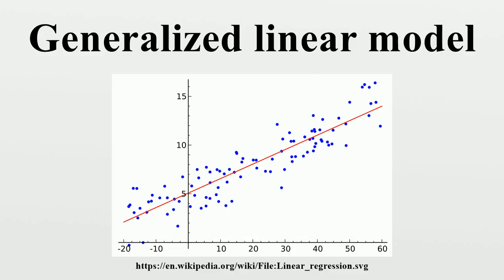Linear Regression. A simple, very important example of a generalized linear model is linear regression. In linear regression, the use of the least squares estimator is justified by the Gauss-Markov theorem, which does not assume that the distribution is normal. From the perspective of generalized linear models, however, it is useful to suppose that the distribution function is the normal distribution with constant variance and the link function is the identity, which is the canonical link if the variance is known. For the normal distribution, the generalized linear model has a closed form expression for the maximum likelihood estimates, which is convenient. Most other GLMs lack closed form estimates.